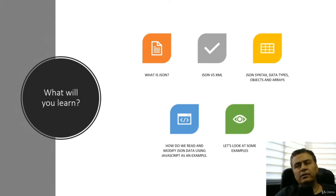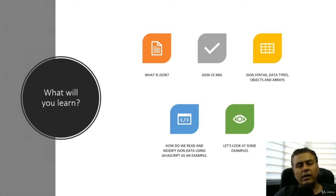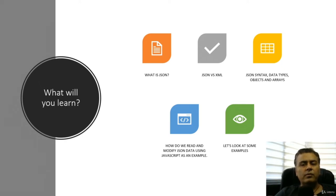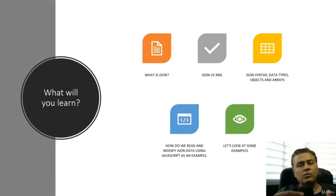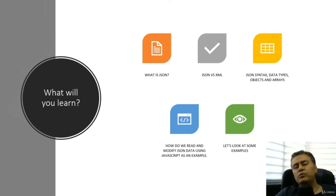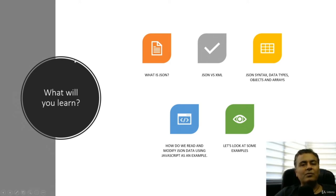We'll look at how JSON differs from XML, what the similarities are, and from there we'll start digging into its syntax, types, what are objects and arrays, and how do we basically read and modify stuff. Once those are done we'll look at some examples. It will be mostly a practical course — more of a learn-by-doing approach. So let's get started without wasting further time.